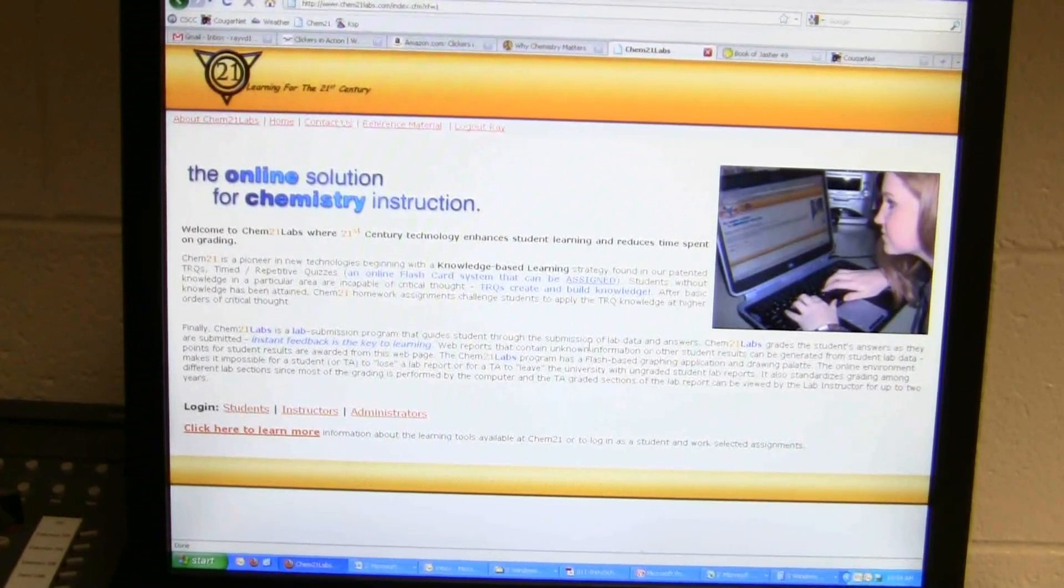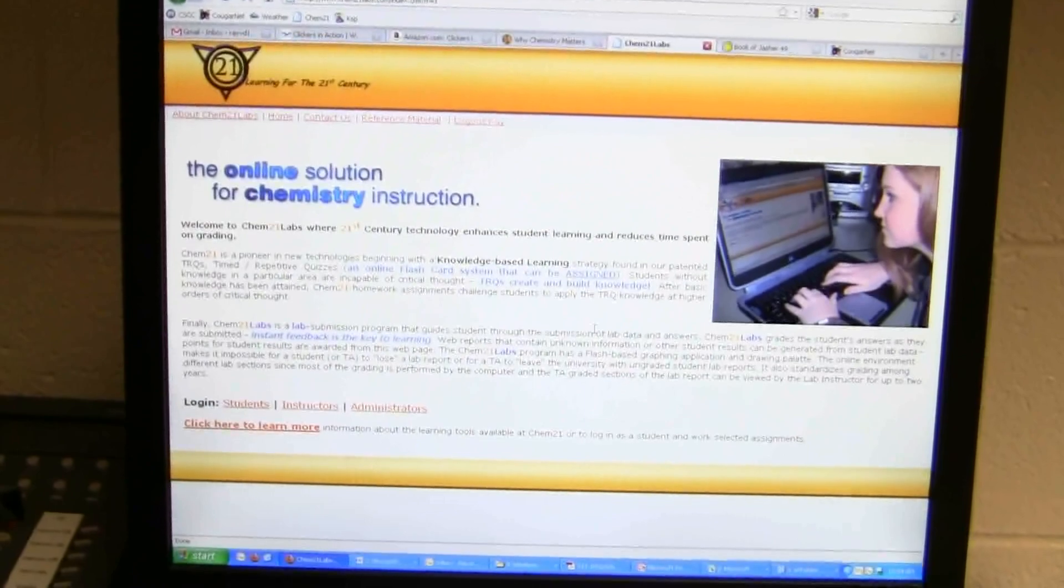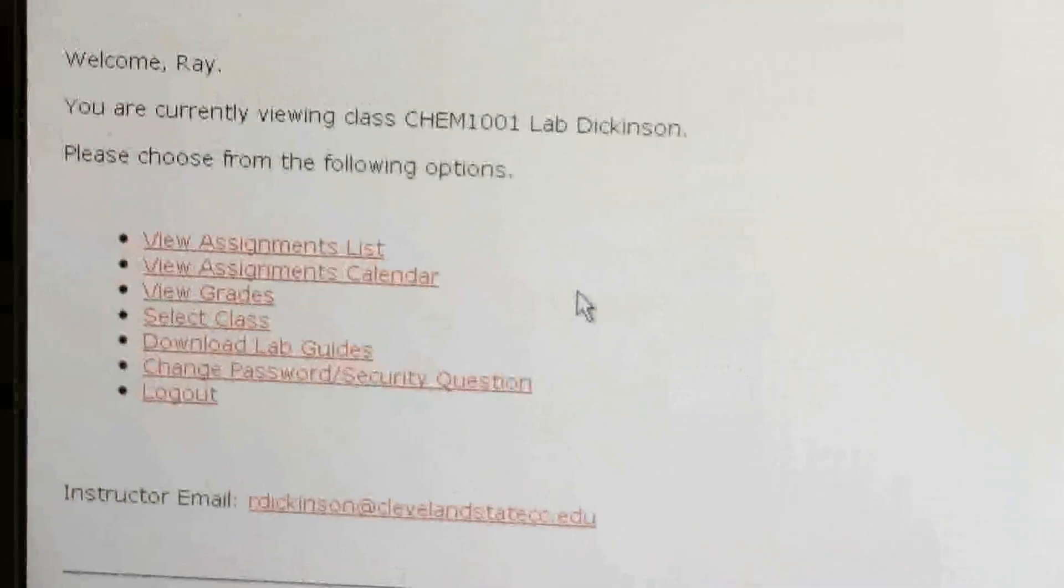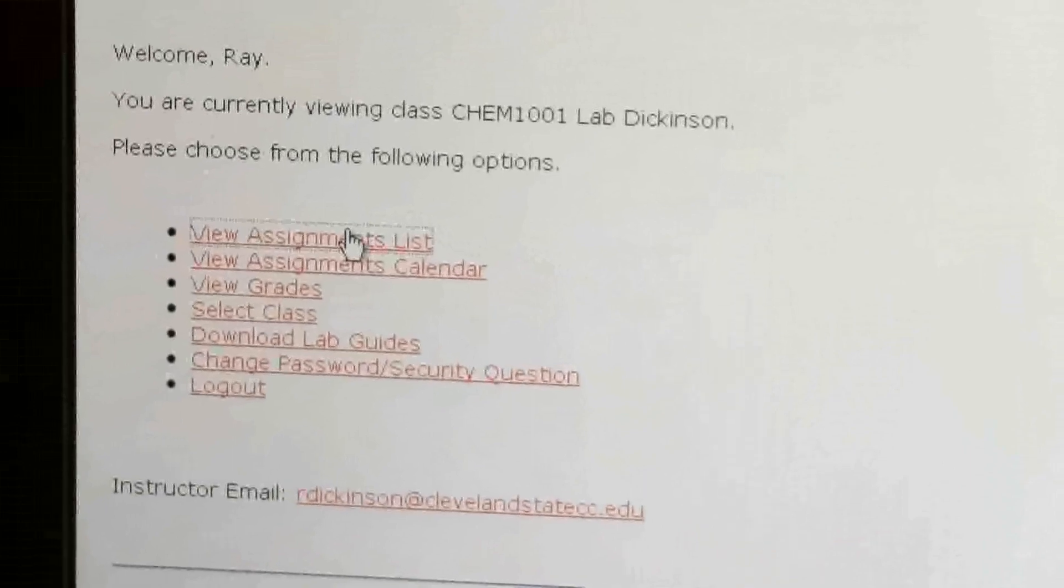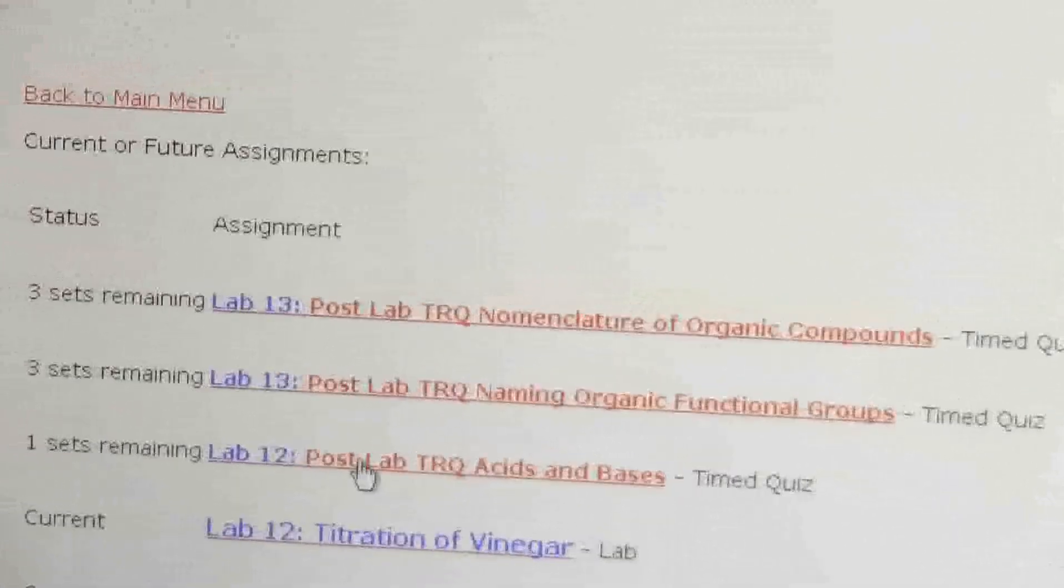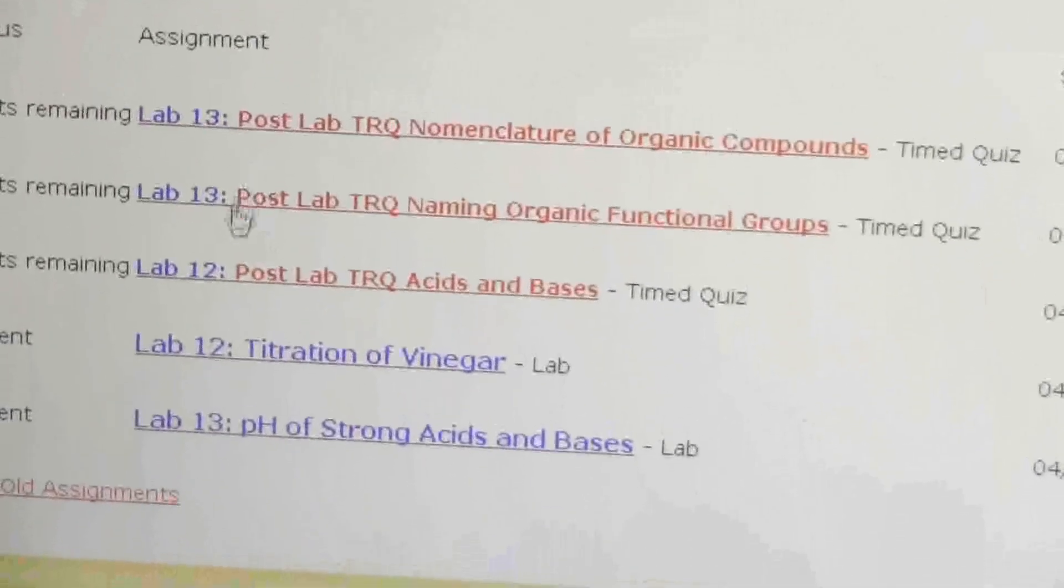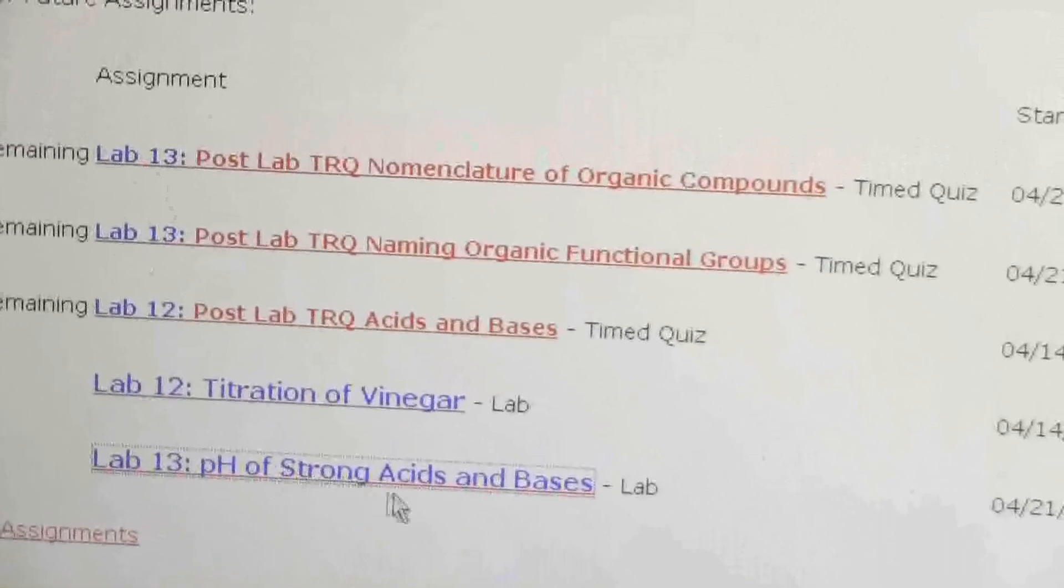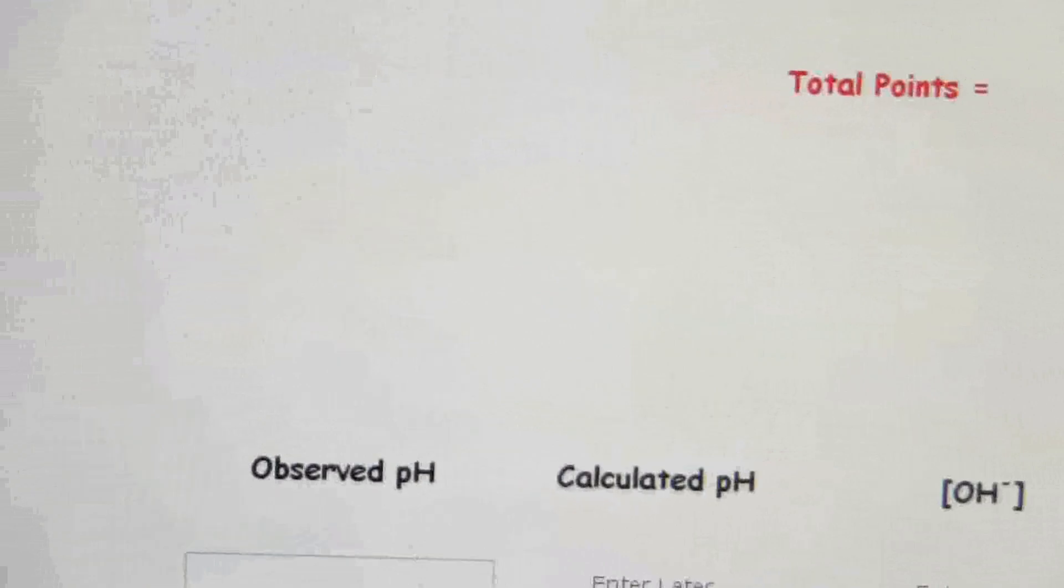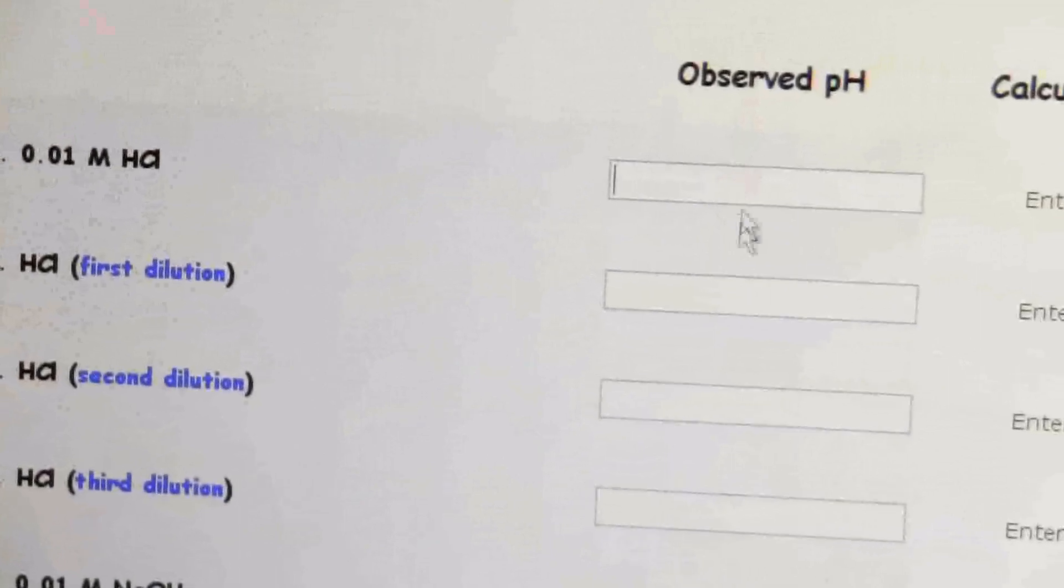Here is the main screen for the Chem 21 site and you should be familiar with this. You go down to login as a student and you'll enter in your username and password which I've already done, and then view assignments list and there are some TRQs and such for 12 and 13.